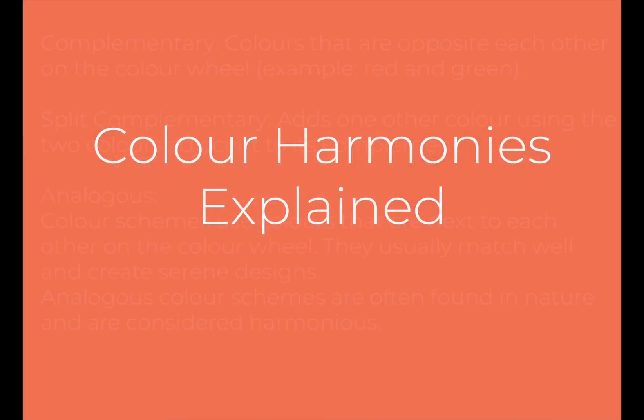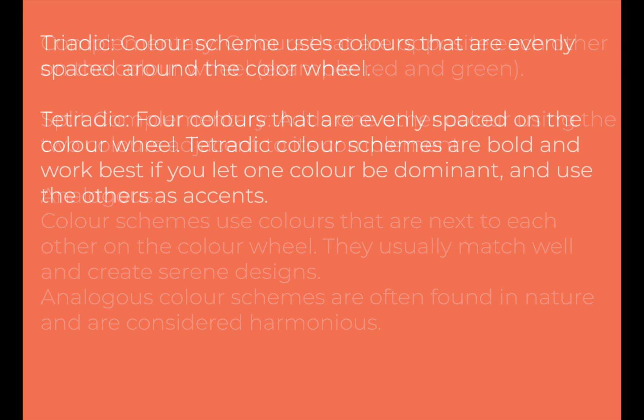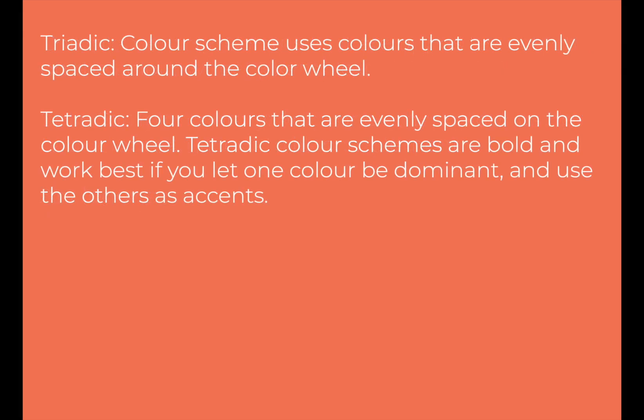Color harmony explained. Complementary colors are opposite each other on the color wheel, for example red and green. Split complementary adds one other color using the two colors adjacent to its complement. Analogous color schemes use colors that are next to each other on the color wheel — they usually match well and create serene designs, and are often found in nature. Triadic color schemes use colors evenly spaced around the color wheel. Tetradic uses four colors evenly spaced on the color wheel and works best if you let one color be dominant and use the others as accents.